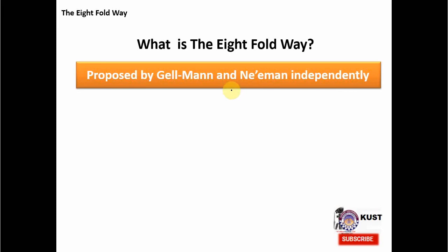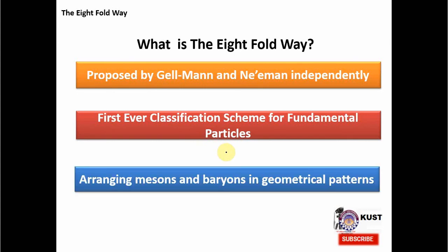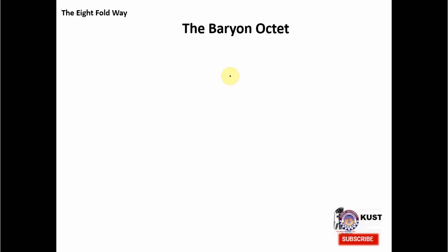Eightfold Way was proposed by Gell-Mann and Neeman independently, and it was the first ever classification scheme for fundamental particles. The purpose was to arrange mesons and baryons into some geometrical patterns. So now we are going to see the first example which is called the baryon octet, where eight of the baryons were arranged into a geometrical pattern of hexagon. But for this pattern to work, we need to select two properties.